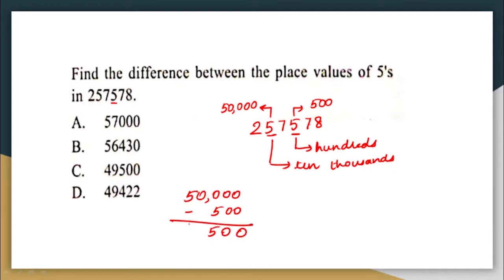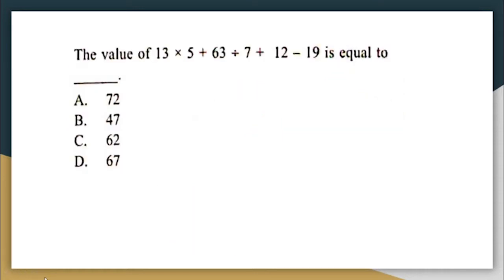The difference between the two place values is 50,000 minus 500, which equals 49,500. The correct answer is option C.